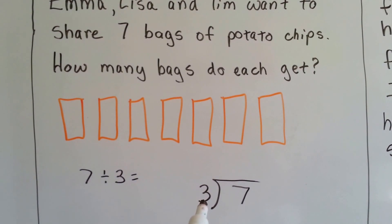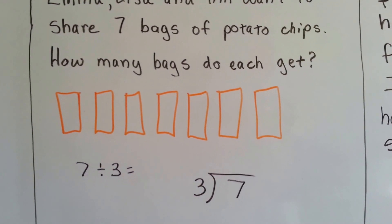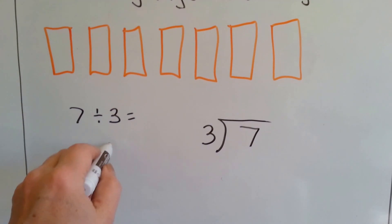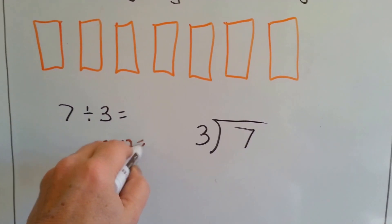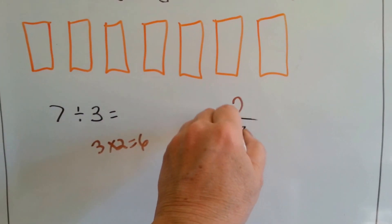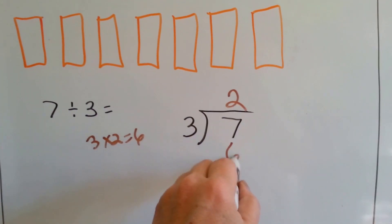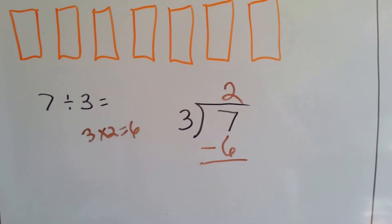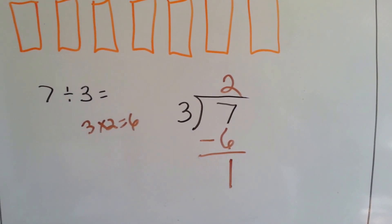We need to see how many times three can fit into seven. Three times two is equal to six. That's close. We do our three times two and subtract that six from the seven and we get one left over.